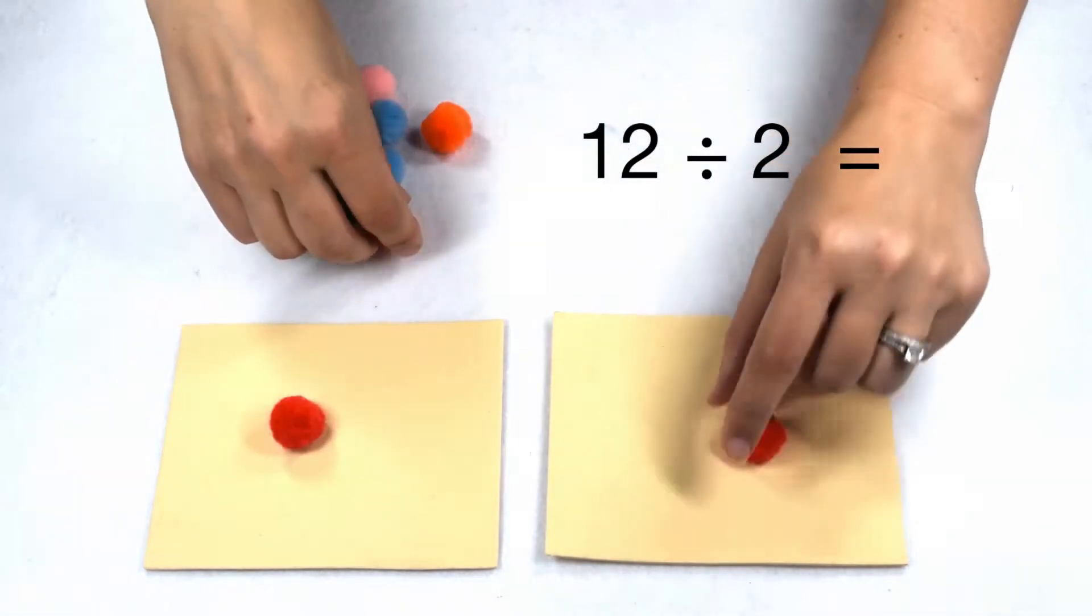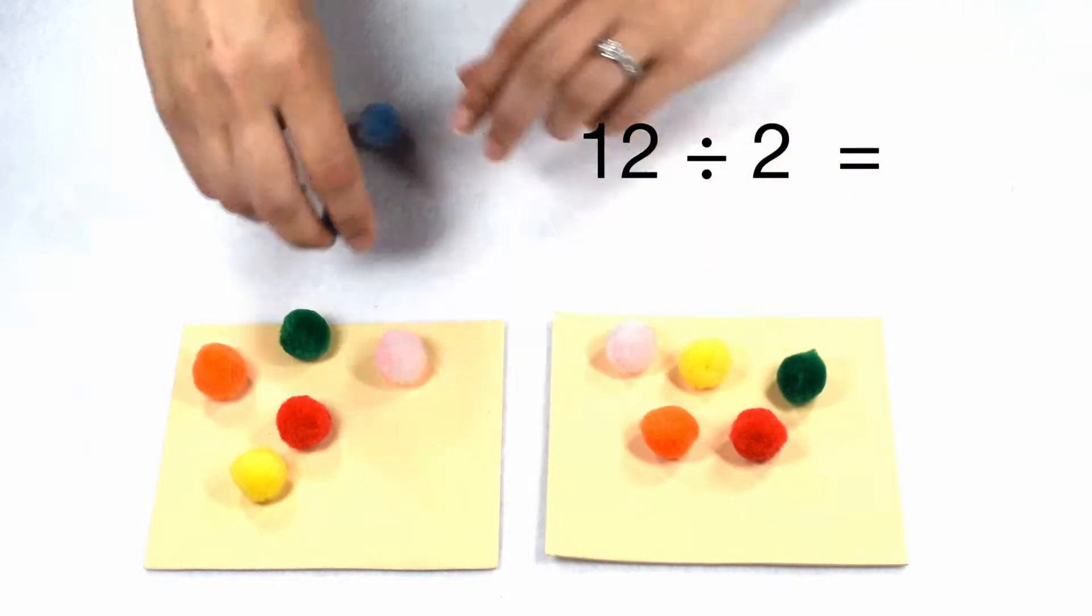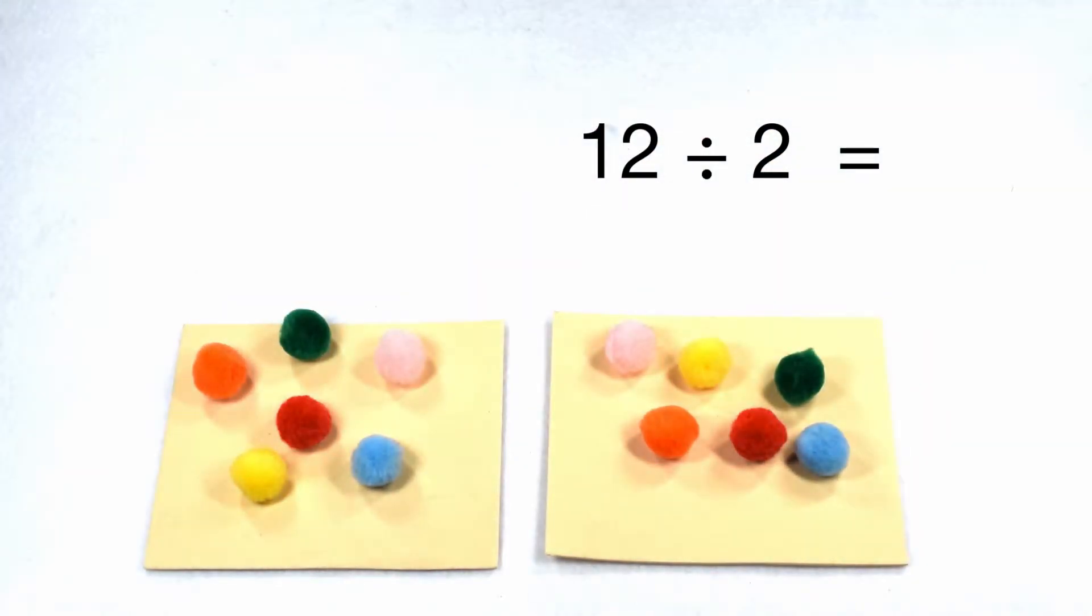So as I start to work to split those 12 items into 2 groups, we should notice that everything is going to go into 2 groups with nothing left over. I can put 6 items into each group. So 12 divided by 2 gives me 6.